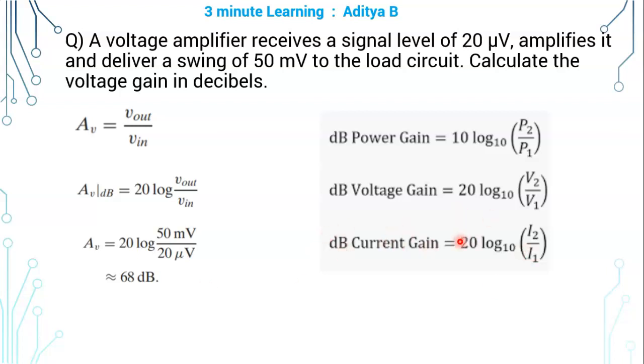But when coming to decibel gains, decibel voltage gain is 20 log of V2 by V1 to the base 10. Here V2 subscript 2 indicates output port and subscript 1 indicates input parameter. dB current gain is 20 log of I2 by I1 to the base 10.